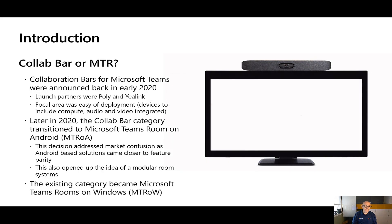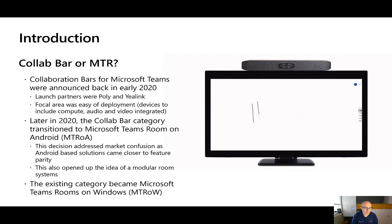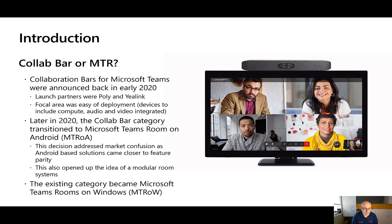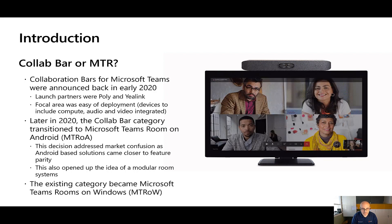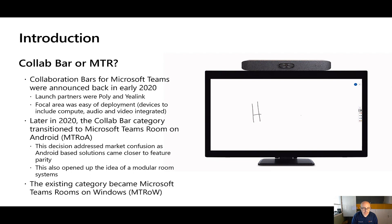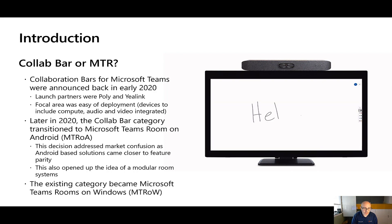The collaboration bar was the original category name for MTR on Android. It was announced back in early 2020, and launch partners at the time were Poly and Yealink. The focus area was around a fully integrated device that had compute on board, audio and video, and was super easy to deploy. Later on, at Ignite last year, that category was transitioned over to Microsoft Teams Room on Android.